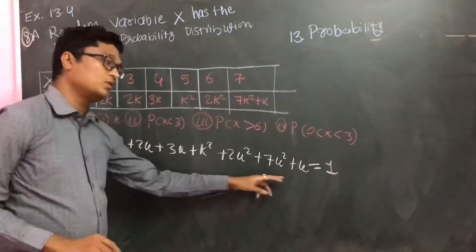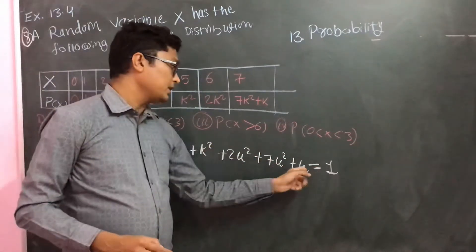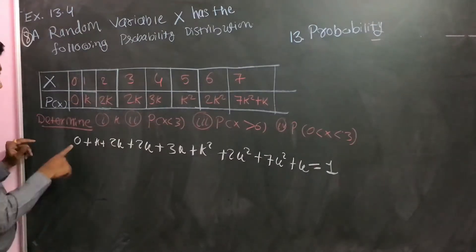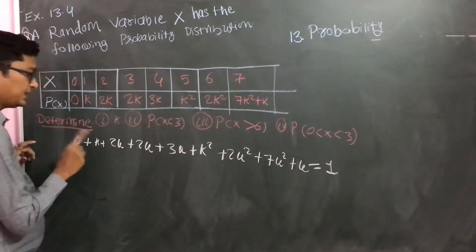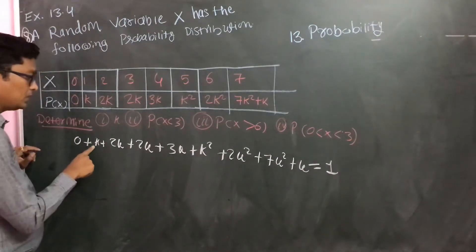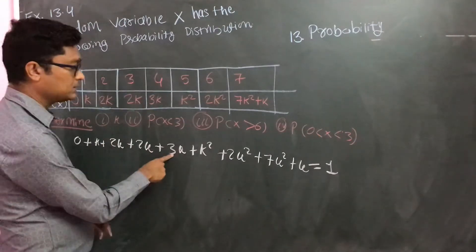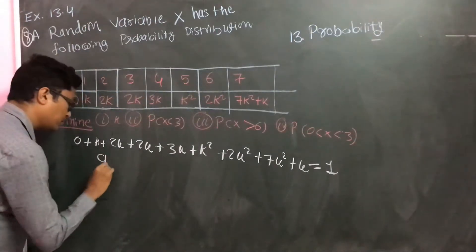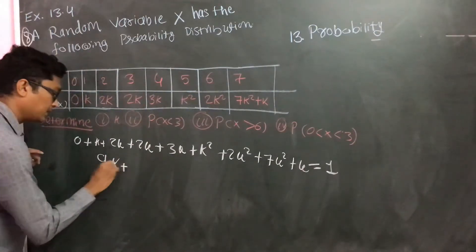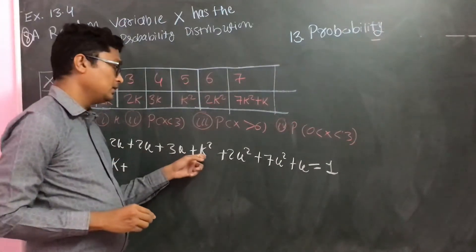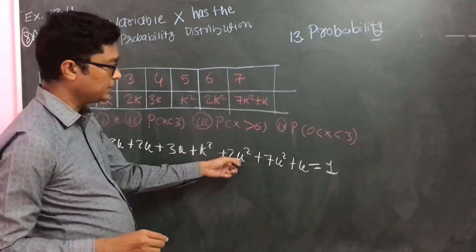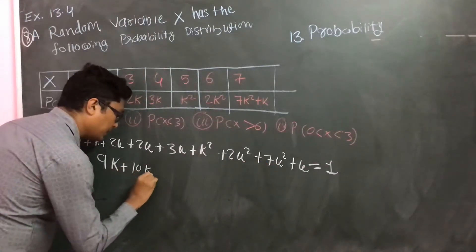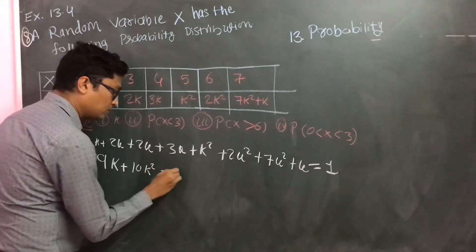So now we have only one unknown and you can solve it and find out the value of k. Let's do it. So 1 plus 2 is 3, 3 plus 2 is 5, 5 plus 3 is 8, 8 plus 1, that is 9k. So 9k plus k square plus 2, so 3 plus 7 is 10, so 10k square. So 10k square plus 9k equals 1.